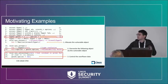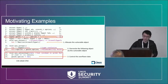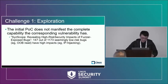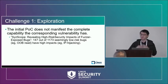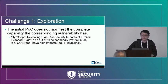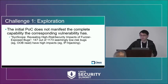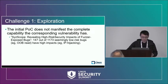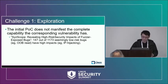Considering these examples, what are the challenges we face implementing such a tool to evaluate security impacts? The first challenge is that the initial POC we have does not necessarily manifest a complete capability for the bug. To give some sense of how common this problem is, we actually have a follow-up work measuring this phenomenon, and we found that among more than 1,000 seemingly low-risk bugs — for example, out-of-bound read and warnings — 147 of them actually have high impacts.